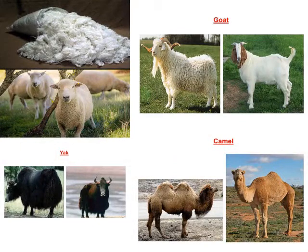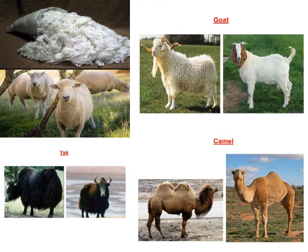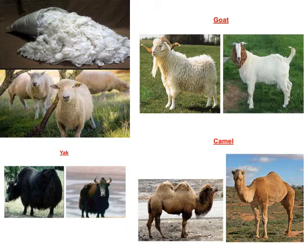Where do we get wool for woolen clothes? We get our wool from sheep, goat, yak, and some other animals. Wool-yielding animals bear a thick coat of hair on their body, and these hairs trap a lot of air. We already know that air is a poor conductor of heat, so it does not allow the temperature of the bodies of these animals to fall. Thus, the hair keeps these animals warm.